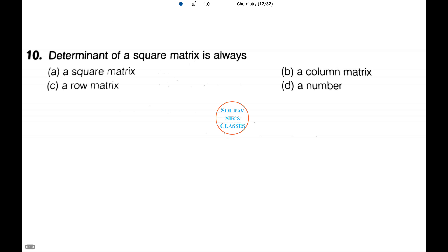The cesium chloride coordination number is 8,8. Let's see another question. Now a very easy question to relax your brain a bit. The determinant of a square matrix is always a square matrix, column matrix, row matrix, or a number? The answer is very simple: a number. A determinant is a real number associated with every square matrix.